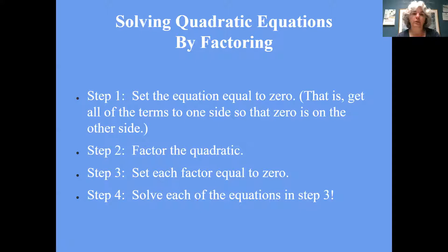To set the equation equal to zero, you want to get all of the terms to one side so that you have a zero on the other side. Then you're going to factor the quadratic side, set each factor equal to zero — I will explain why you do this step in a minute — and then solve each of the little equations that you set equal to zero in step three.